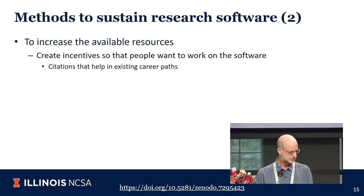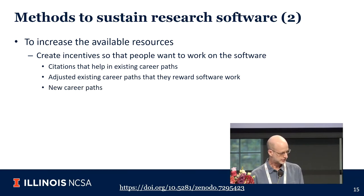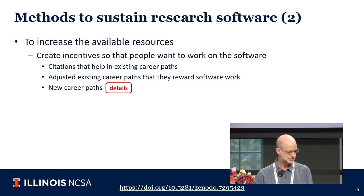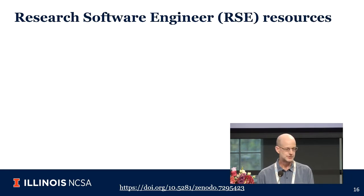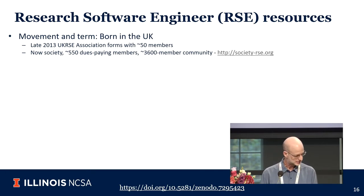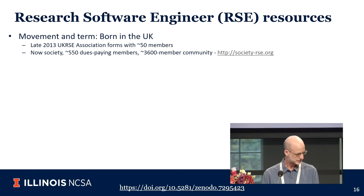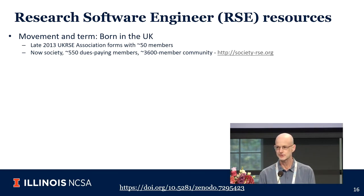The next thing is to think about career paths — adjusting existing paths so that faculty software work is better rewarded — and also creating new career paths. I want to make a slight digression into research software engineers. This term and movement were born in the UK in 2012; the UK RSE association was created with about 50 members, with support from the Software Sustainability Institute. This has now led to a society of RSEs with about 600 dues-paying members and about 3,600 people in the overall community.